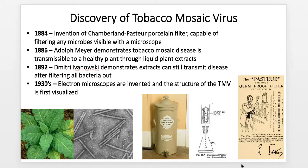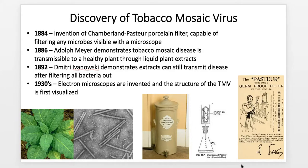The Pasteur filter was a revolutionary filter able to remove any bacteria visible in a liquid. Even if you couldn't see it with your naked eye, if it was visible with a microscope, you could get those microorganisms out of the liquid. In around 1886, tobacco mosaic disease — which causes tissue necrosis in tobacco plants — was shown to be transmissible through liquid plant extracts. Then in 1892, Dmitry Ivanovsky demonstrated that these extracts could transmit tobacco mosaic disease from a sick plant to a healthy plant even after filtering through the Pasteur filter, showing that something other than visible bacteria was causing this disease.